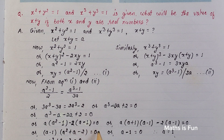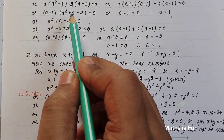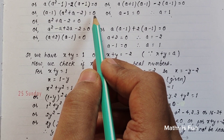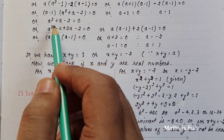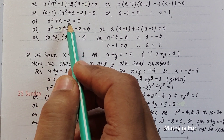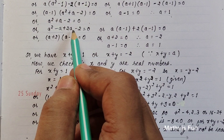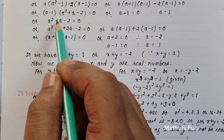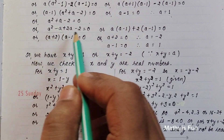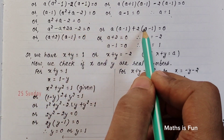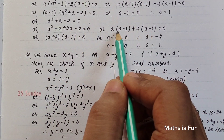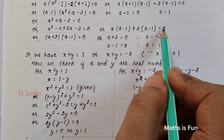Taking (a - 1) common gives (a - 1)(a² + a - 2) = 0. Setting a - 1 = 0 gives a = 1. For the second factor, a² + a - 2 = 0, we factorize as a² - a + 2a - 2 = 0. Taking a common from the first two terms gives a(a - 1), and taking +2 common from the last two gives +2(a - 1).